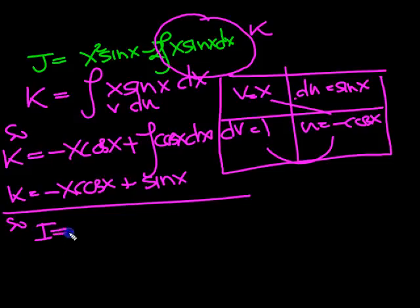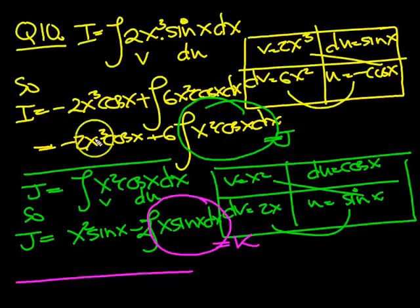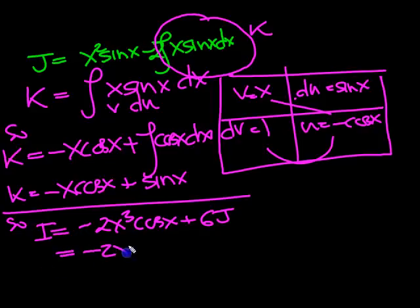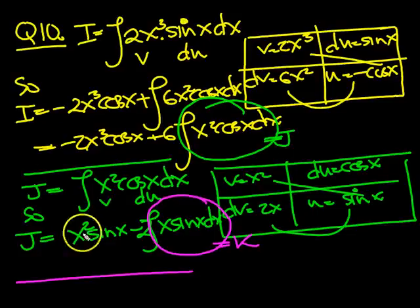So i equals, what have we got? We've got minus 2x cubed cos x, plus 6j. And that's equal to then, minus 2x cubed cos x, plus 6 lots of j. And j was equal to x squared sine x, minus 2k.